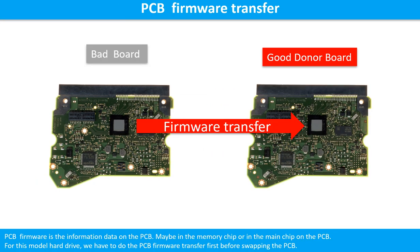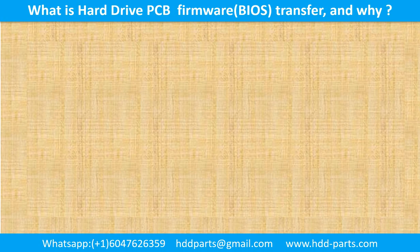PCB board firmware is the information data stored on the PCB board. It may be in the memory chip or in the main chip on the PCB board. For this model hard drive, we have to do the PCB firmware transfer first, then swap the PCB board. Otherwise, the new board will not work on the original hard drive. So what is the hard drive printed circuit board firmware transfer and why is it needed?